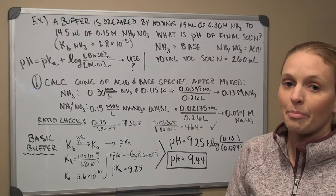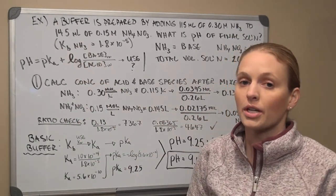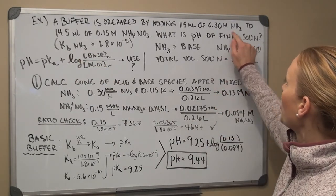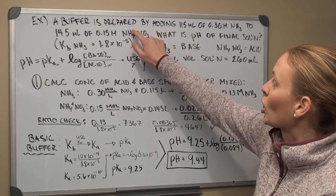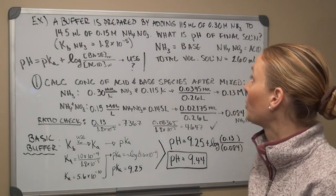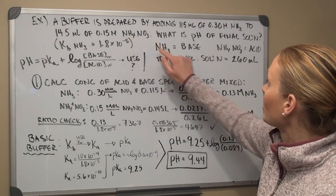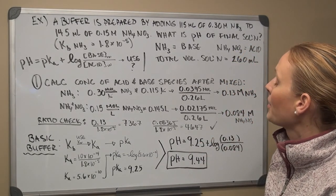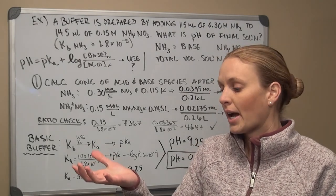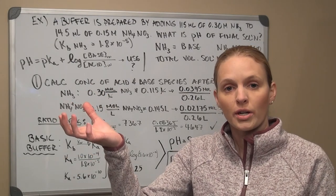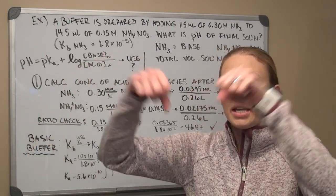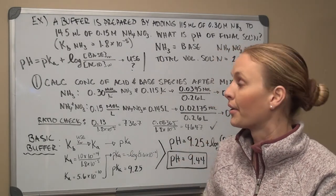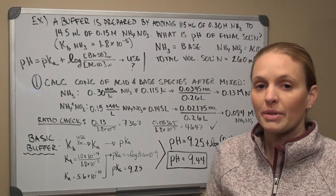We know it's a buffer. First, identify the base and acid: we're given the Kb of ammonia, indicating ammonia is the base. NH₄⁺ is the conjugate acid of ammonia, so ammonium nitrate is the conjugate acid salt. When two solutions are mixed together, they dilute each other, so concentrations will change.